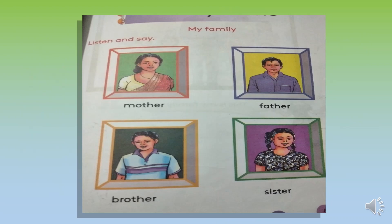Look at here, you can see four pictures. One is mother, one is father and one is brother and sister. These are the members in a family: mother, father, brother, sister.